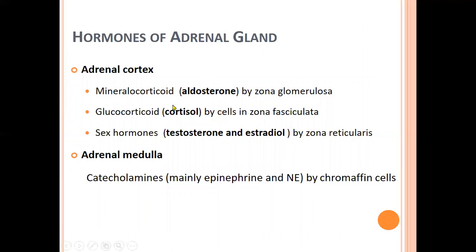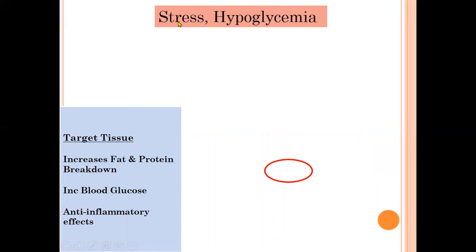The hormones produced are mineralocorticoids — mainly aldosterone — by the zona glomerulosa; glucocorticoids — cortisol — by the zona fasciculata; sex hormones testosterone and estradiol by the zona reticularis; and mainly epinephrine by the adrenal medulla's chromaffin cells. We will be more focused toward the glucocorticoids, in particular cortisol, which is very important in daily life.